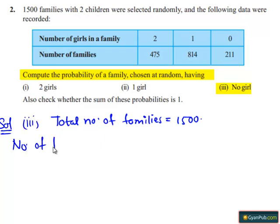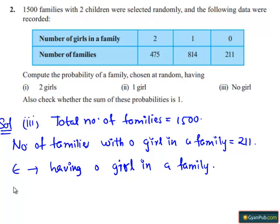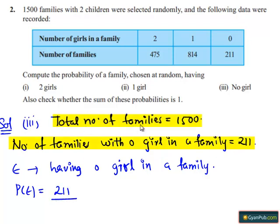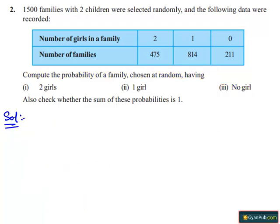Number of families with zero girls in a family equals 211. Let E be the event of having zero girls in a family. Then P(E) equals 211 divided by 1500. Therefore, the probability of a family chosen at random having no girl is 211/1500.